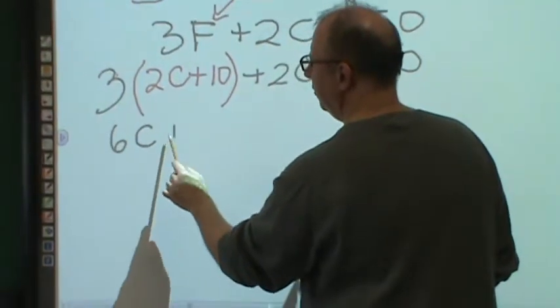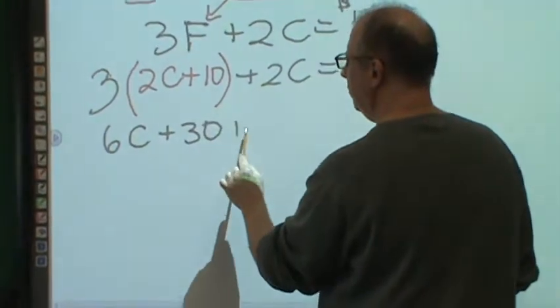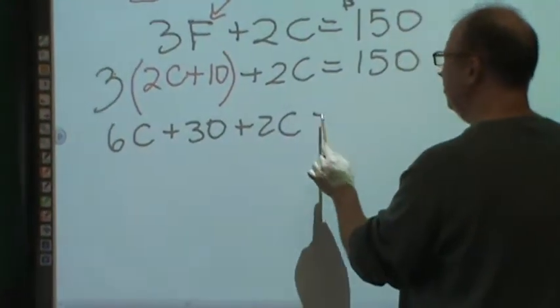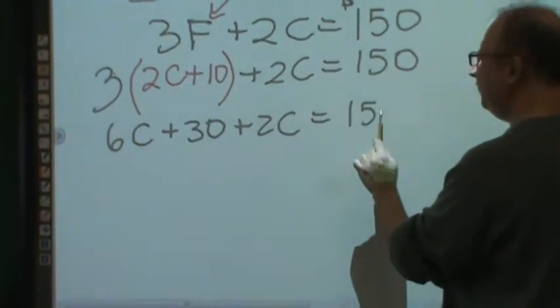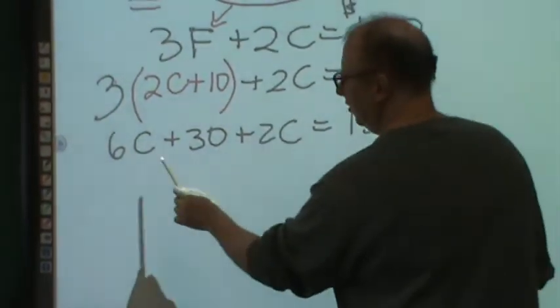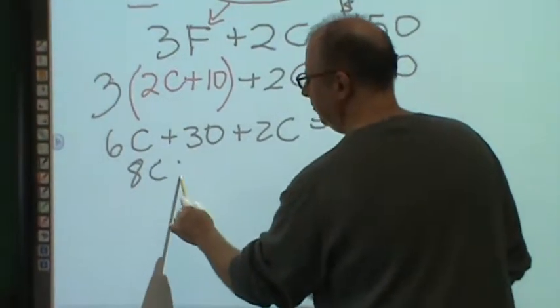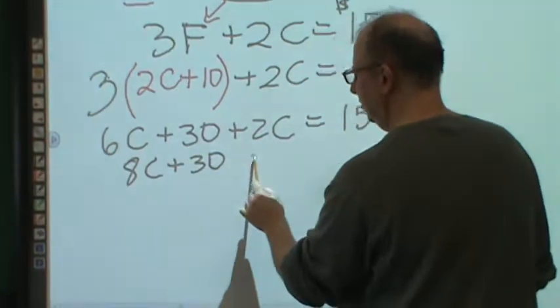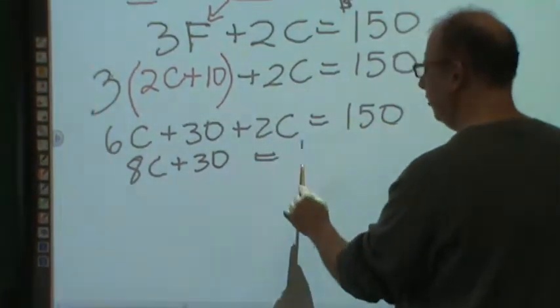6C plus 30 plus 2C is equal to 150. 8C plus 30 is equal to 150.